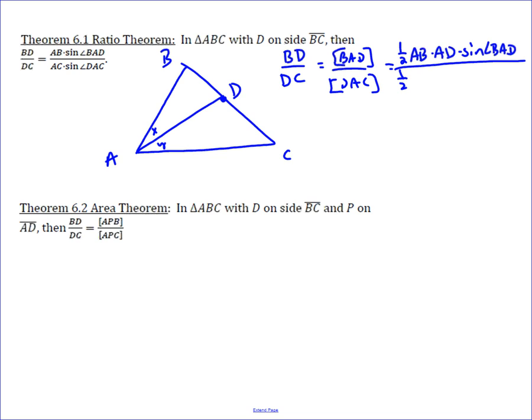which is one-half AB times AC times the sine of DAC. And you can see that the one-halves cancel, ABs cancel,